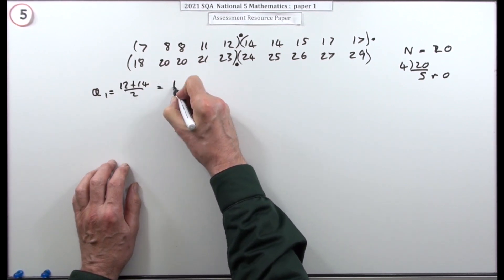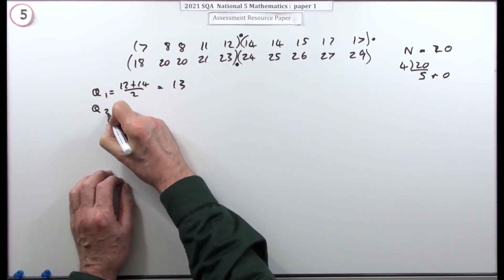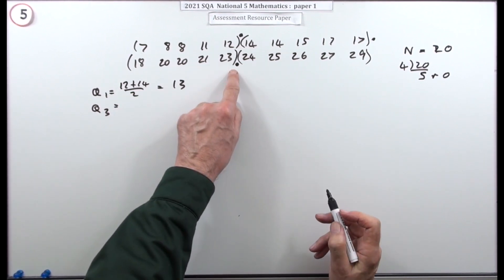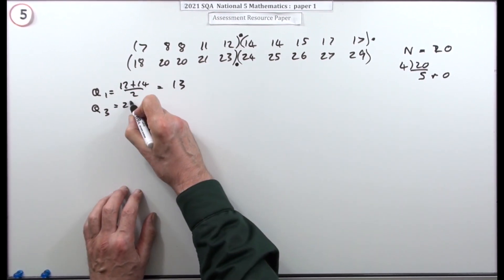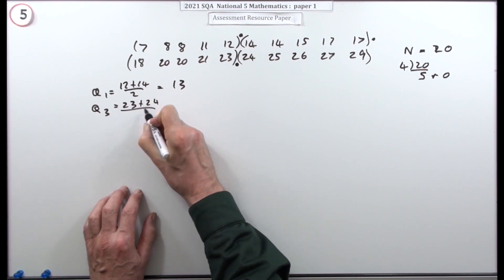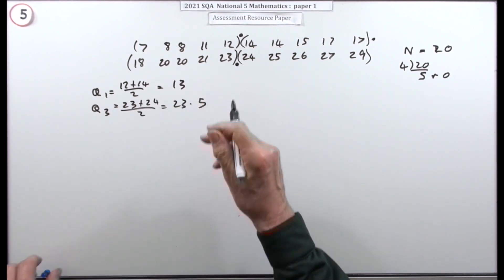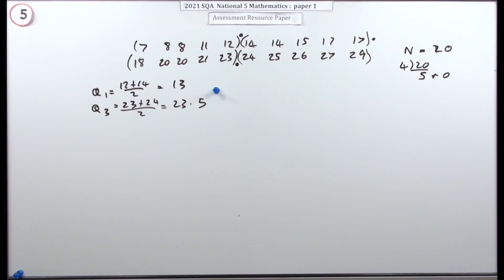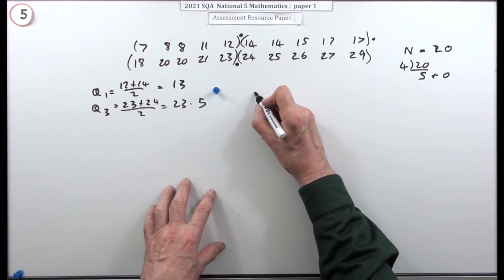I want the highest quartile—that's between 23 and 24, so that's 23.5. There's the first mark: get the two quartiles, the upper and lower.